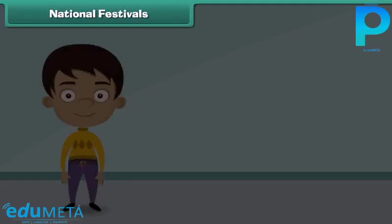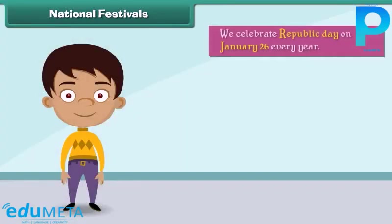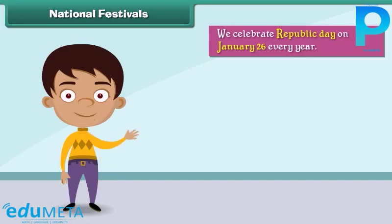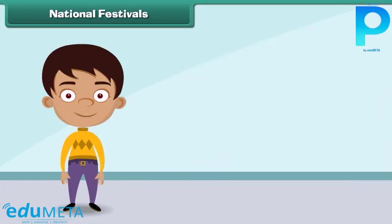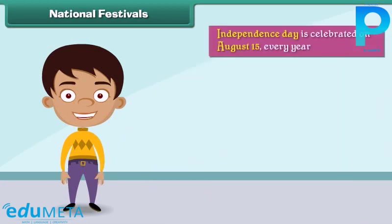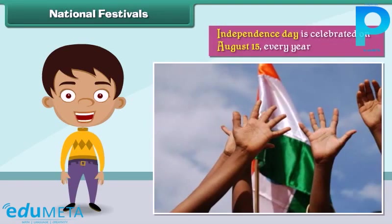We celebrate Republic Day on January 26 every year. On this day, the Constitution of India came into force. Independence Day is celebrated on August 15 every year — the day India got freedom from the British.